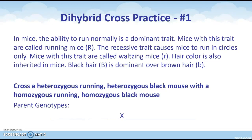Using our letters, heterozygous for running means we have two different letters: big R and little r. They are also heterozygous for black hair color, so big B and little b. My first parent would be capital R, lowercase r, capital B, lowercase b. My second parent is homozygous running and homozygous black. Homozygous means the same, so running uses capital R, capital R. And homozygous black uses capital B, capital B.